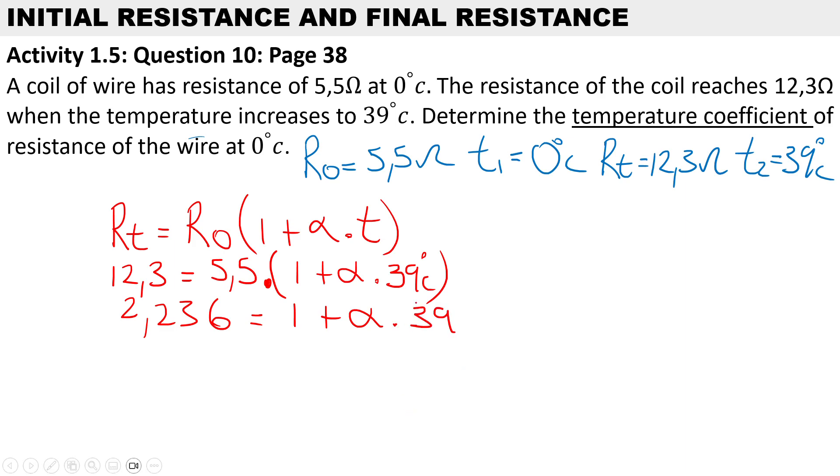Okay, so what we're going to do here to simplify, to get the temperature coefficient on its own: 2.236 minus 1. That will give us 1.236, and we'll have the temperature coefficient α times 39. Now to